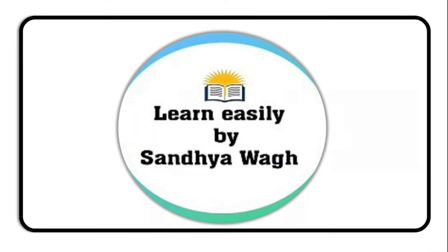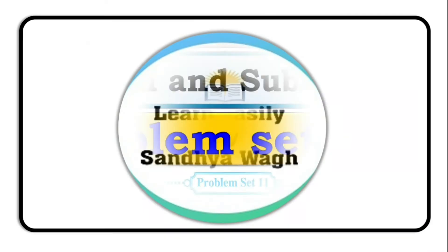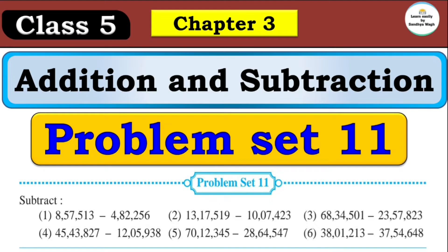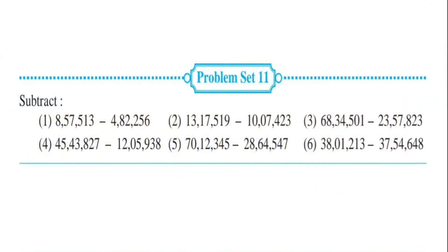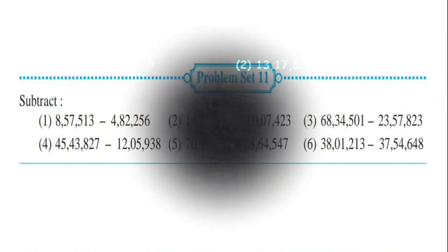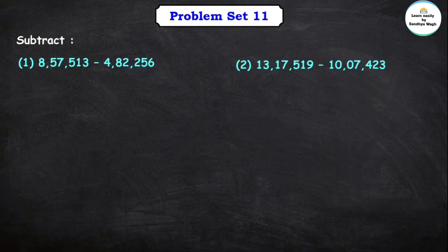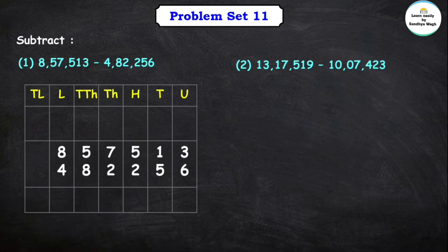Hello dear students, we are learning chapter number 3, addition and subtraction from 5th standard mathematics. Today we will solve problem set 11 which is given in your textbook. Subtract. Question number 1: 8,57,513 minus 4,82,256.